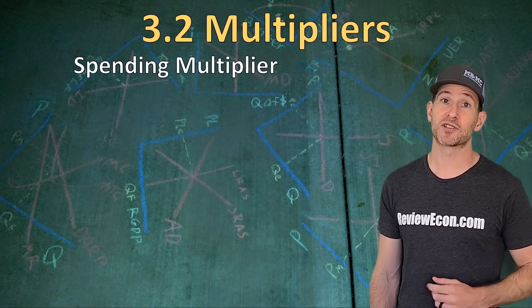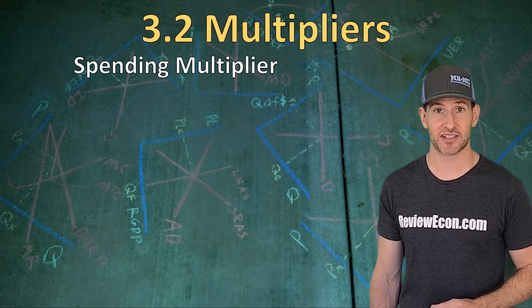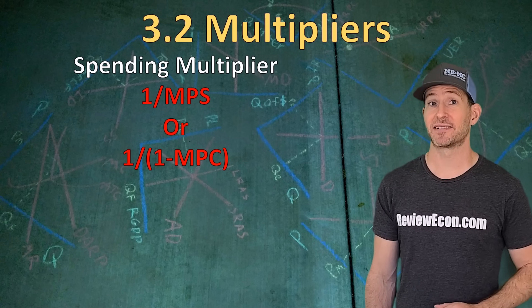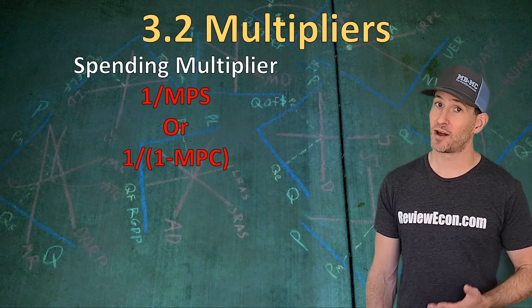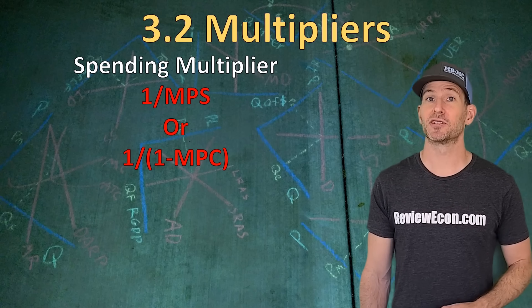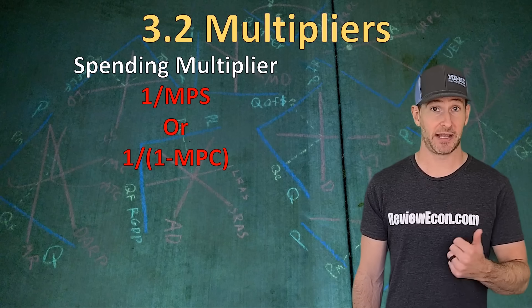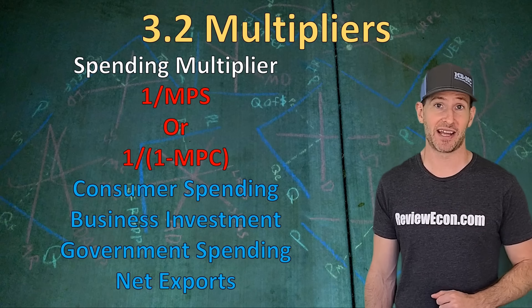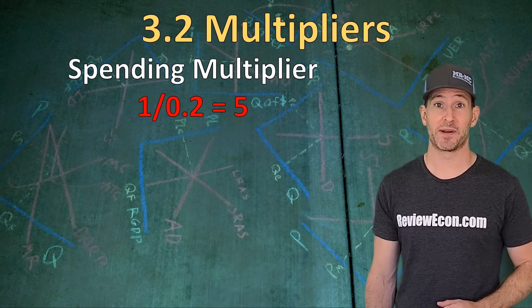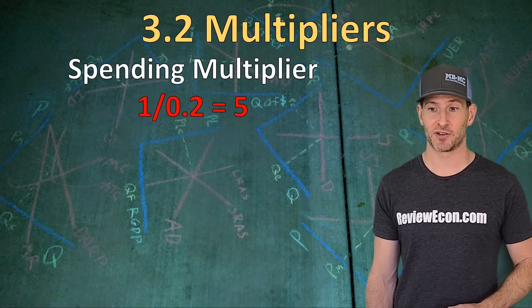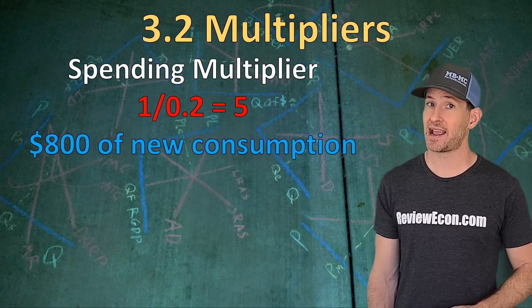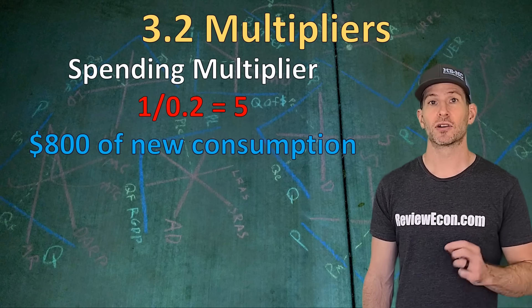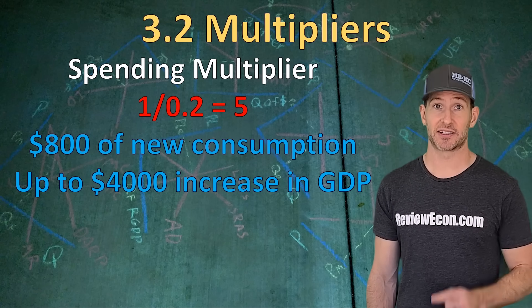We have a formula to find out how much money that initial $800 increase in consumption can impact GDP. It's called the spending multiplier. The spending multiplier is 1 divided by the marginal propensity to save, or 1 divided by 1 minus the marginal propensity to consume. This spending multiplier applies to any new spending within the economy — consumer spending, business spending, government spending, or foreign spending in the form of net exports. For the example we just saw, 1 divided by the MPS of 0.2 gives us a spending multiplier of 5. That means the $800 of new consumption could cause a $4,000 increase in gross domestic product.